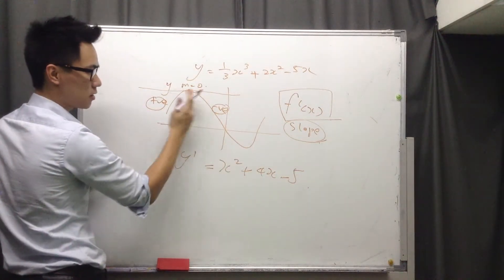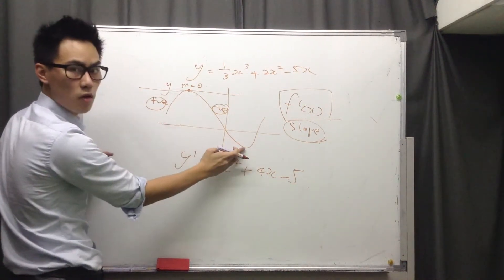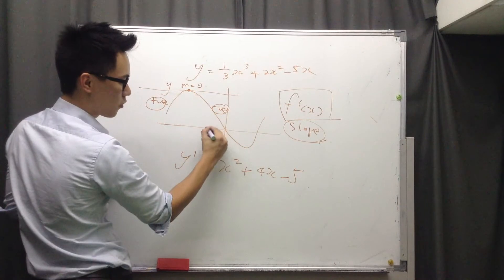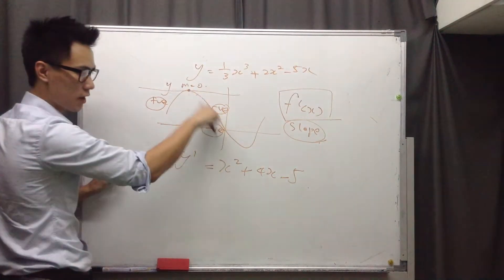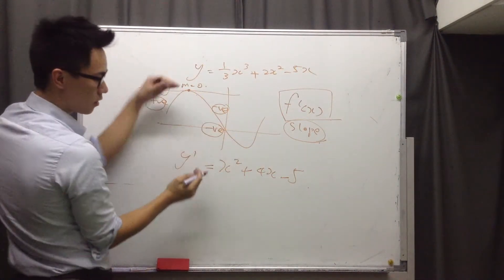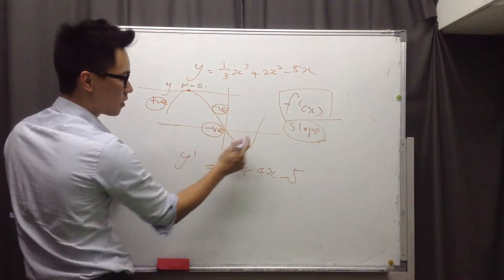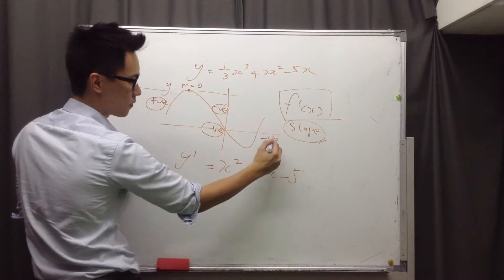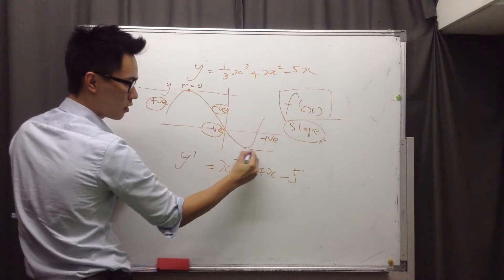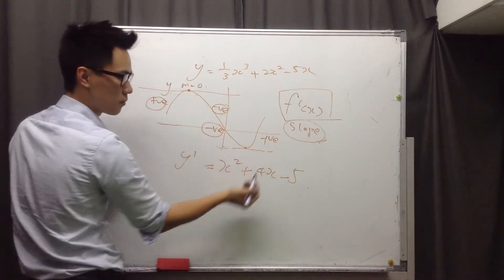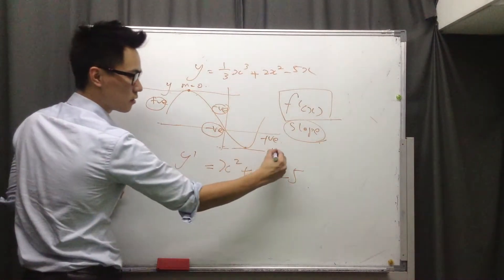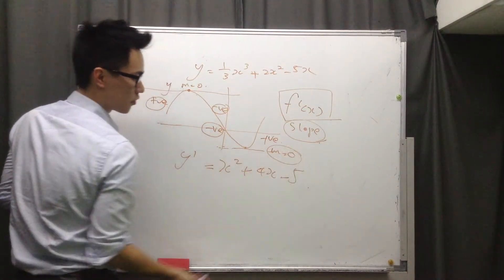And how about, so this is the maximum point. And how about the minimum point right here? It goes from negative slope, goes down. Whenever the graph goes down, the slope must be negative. And goes up, positive. So here, it must pass through the point zero. So the slope is zero.